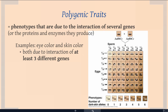Here is what a Punnett square might look like for a trait determined by three different genes. Each gene — A, B — has a dominant recessive relationship. Here all of the recessive alleles are occurring, here all the dominant alleles are occurring, and then we have all these other different combinations that give you a variety of skin colors.